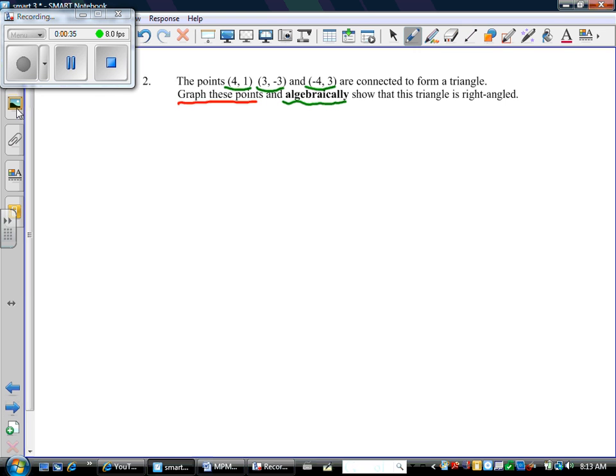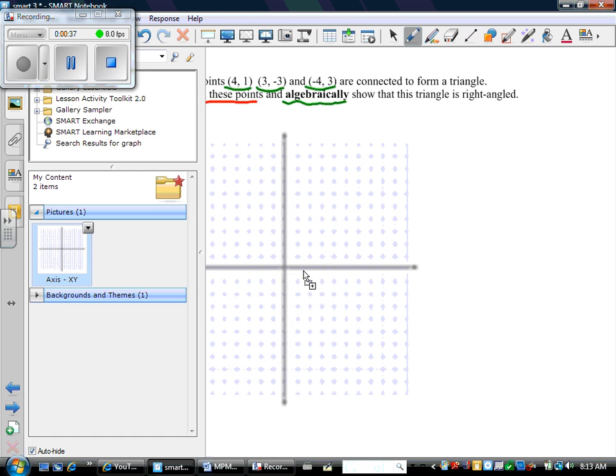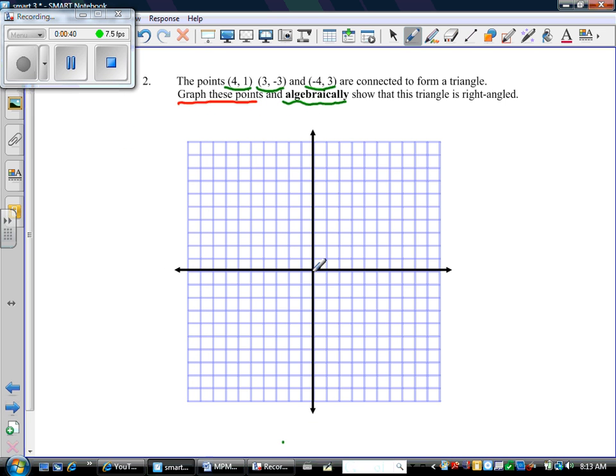So we need to get a graph. Here's my nice graph. It already has the axes well-defined, arrows on the ends, so I just need to add x and y labels. And now I can start graphing this triangle.